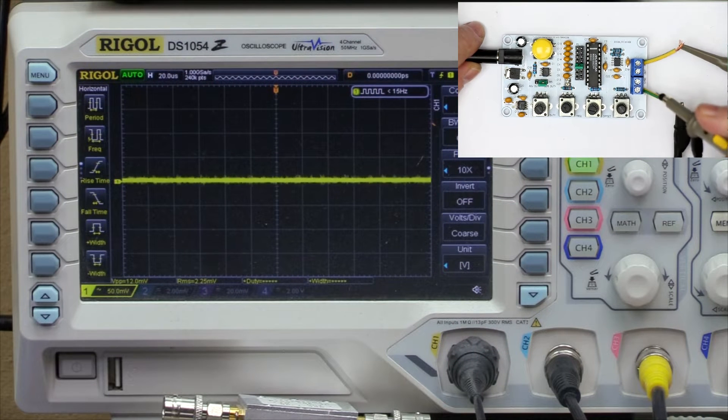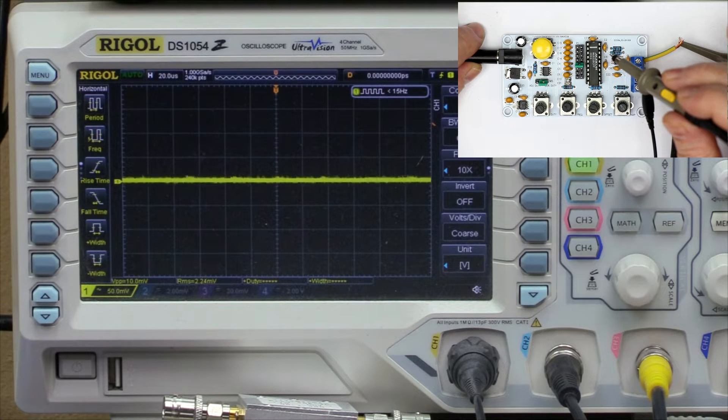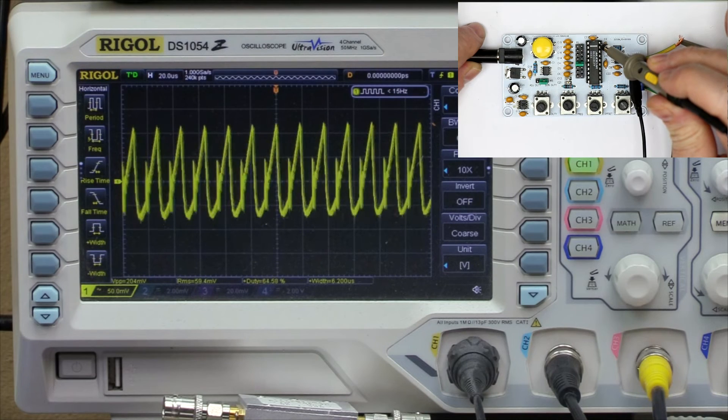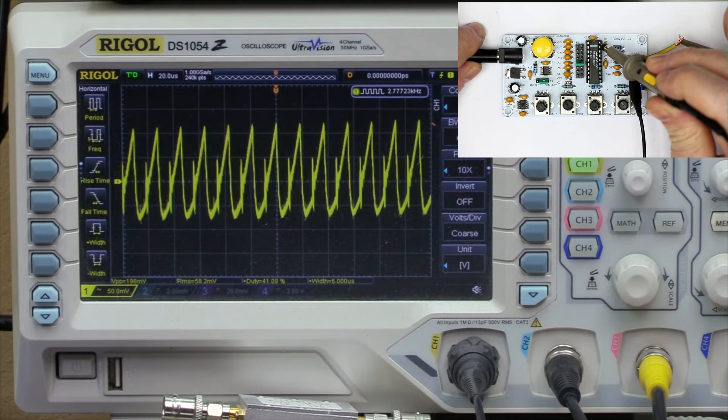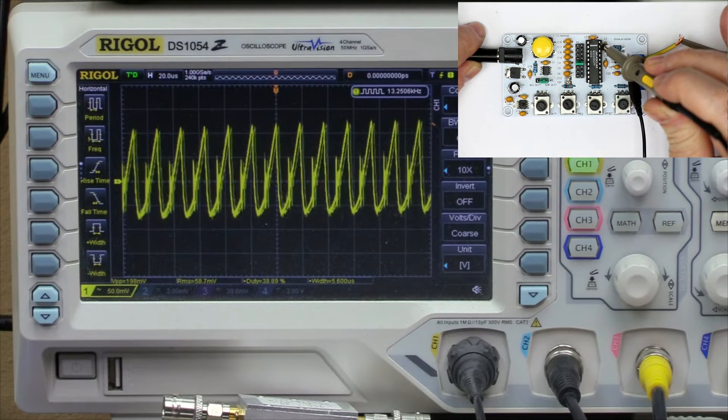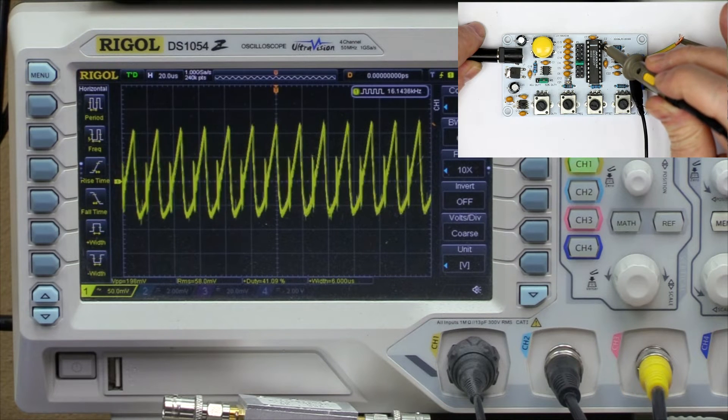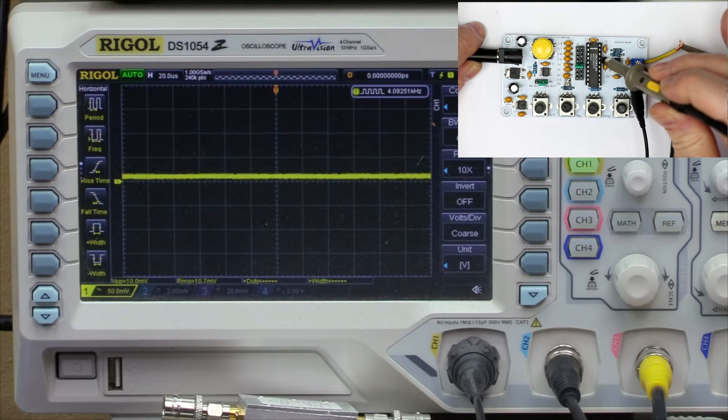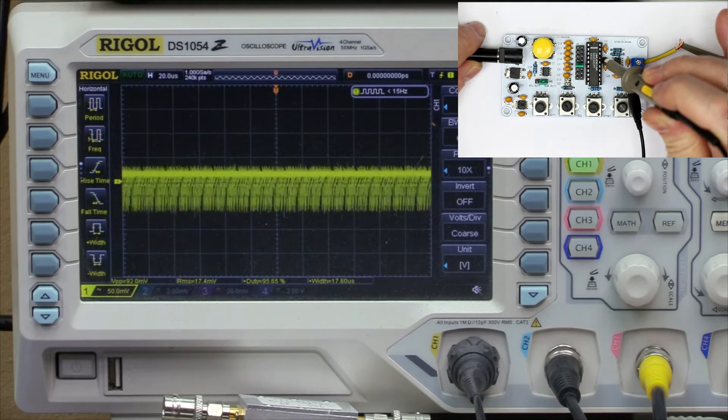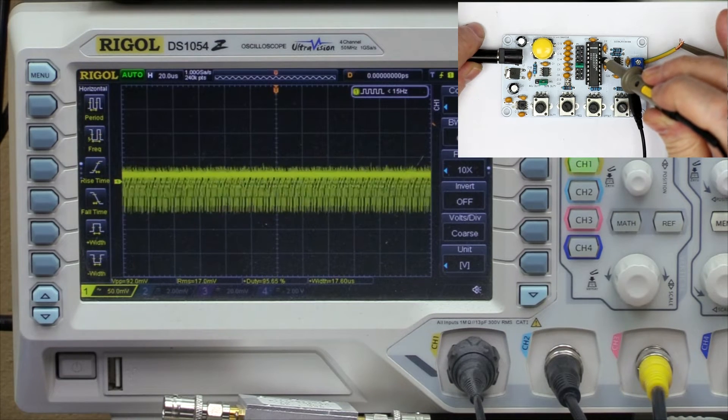Let's start probing with this little function generator. First, let's check the supply voltages and how clean they are. You see the positive voltage has around 150 to 200 millivolts peak-peak high frequency noise overlay, and the negative supply a little less, but also 100 millivolts peak-to-peak noise. That's quite a lot.